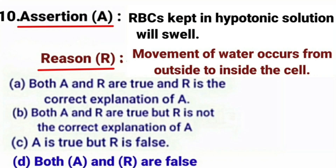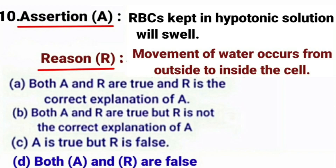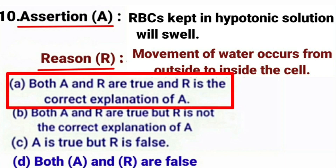Next question. Assertion: RBCs kept in hypotonic solution will swell. Reason: Movement of water occurs from outside to inside the cell. RBCs will swell if placed in a hypotonic solution — the cells gain water by osmosis, so assertion is true. The cells might burst and rupture if placed in hypotonic solution for a long time. In hypotonic solution, movement of water occurs from outside to inside the cell, and the reason is the correct explanation of assertion. So the correct answer is option A — both assertion and reason are true, and reason is the correct explanation.